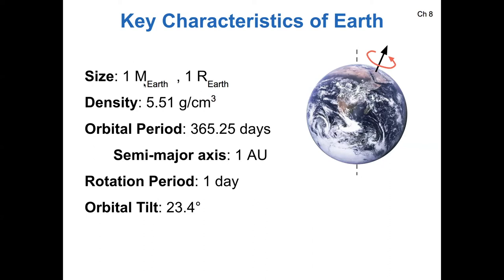So the size of the Earth, well, it has one solar mass and one solar radius worth of size. Its density is 5.51 grams per centimeter cubed. This number would be 1 if the Earth was made of only water. So this higher density means that Earth is a rocky and metallic planet.